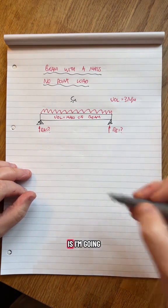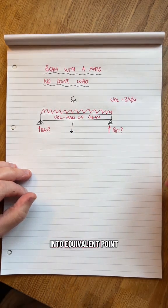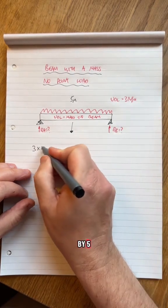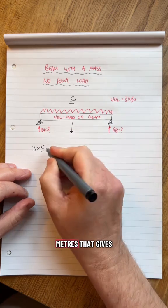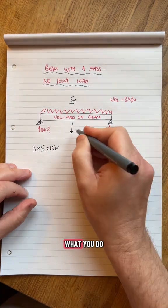The way you deal with this is I'm going to convert the UDL into an equivalent point load. So I'm going to do three newtons per meter times by five, because there's five meters, that gives me 15 newtons equivalent.